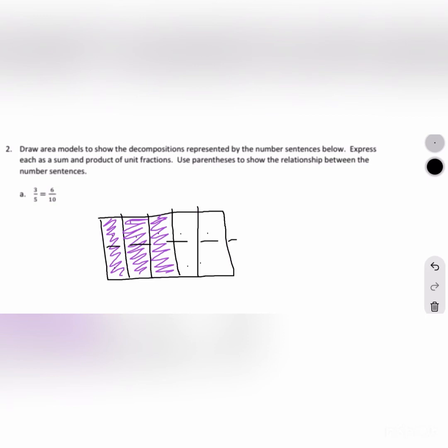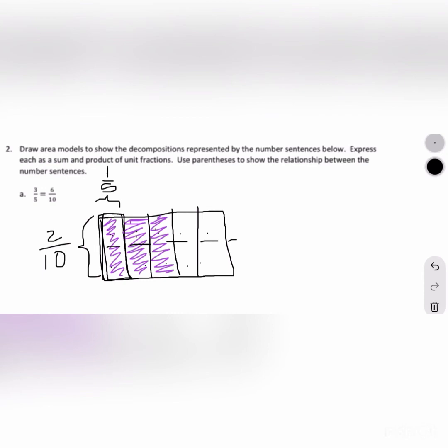If you look at the shaded part, you can see that for every 1 fifth that we have, it takes 2 tenths to equal that same amount of shaded space. So for every 1 fifth, we see that we have 2 tenths. Make sure you keep this in mind for when we write our addition and multiplication sentences. How many tenths are shaded? 1, 2, 3, 4, 5, 6 — we see we have 6 tenths that are shaded.